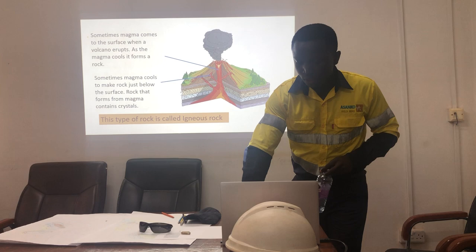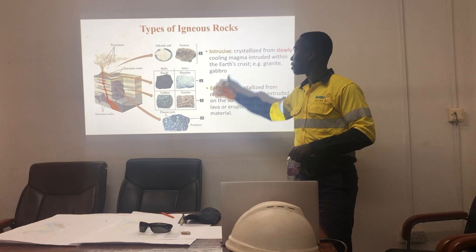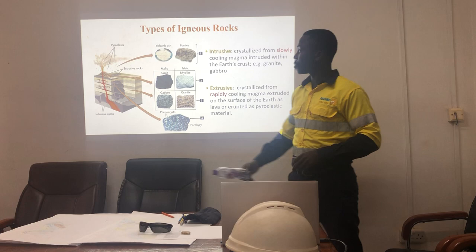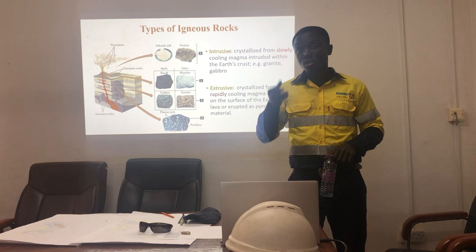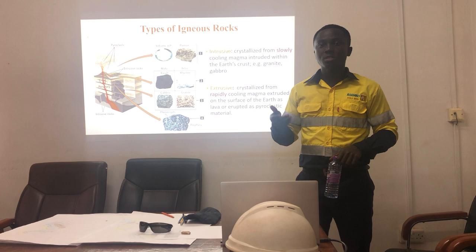Depending on the position at which the igneous rock forms, we may have intrusive igneous rock and extrusive igneous rock. Intrusive igneous rocks are mainly formed within the earth's crust. Extrusive are formed outside the earth's crust. The difference between them is that intrusive igneous rocks have porphyritic textures, while extrusive igneous rocks have phenocrystic textures.